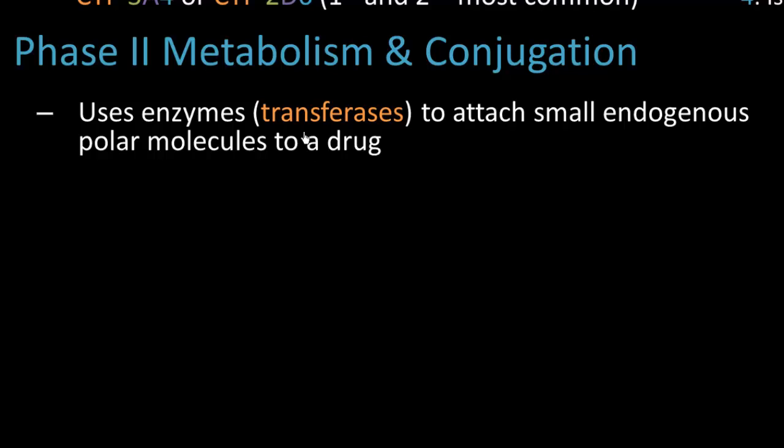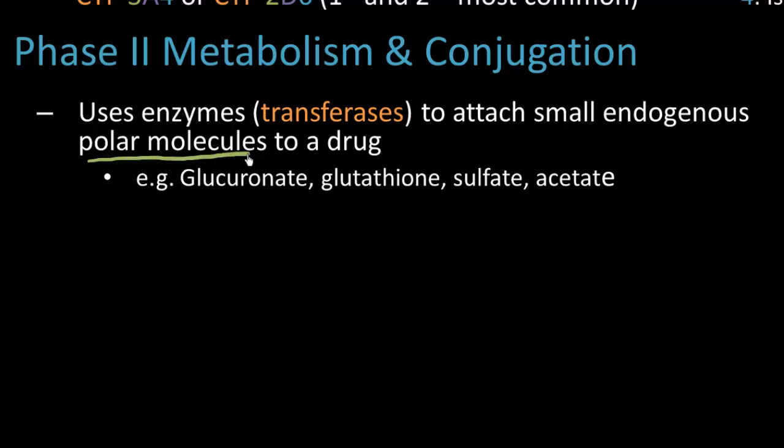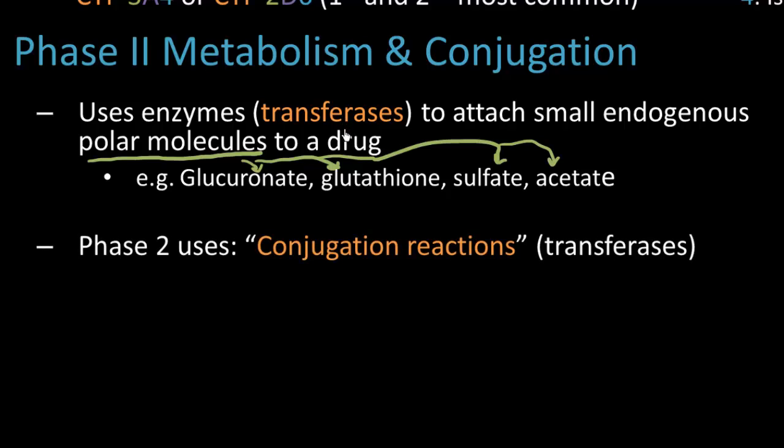We're doing it to make them more water-soluble. So oxygen is not a requirement like in the previous example. And so examples of these polar molecules that we like to attach, well there's glucuronate, we have glutathione, we like to attach a sulfate or an acetate from acetic acid, sulfuric acid. We are transferring things onto molecules and we call these types of reactions conjugation reactions.